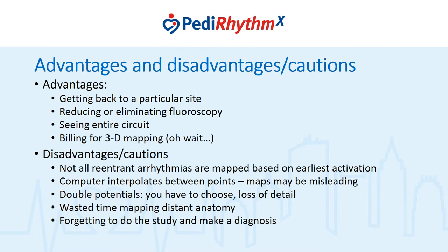There are certainly lots of advantages to electroanatomic mapping, but there are some cautions I want to make sure people understand. For me, the most important advantage is being able to get back to a particular site — this comes up all the time. When you have a successful site, you want to mark it; if the pathway recurs, you want to get back to that spot easily and quickly. Obviously, electroanatomic mapping allows you to reduce or eliminate fluoroscopy. You can also see the entire circuit if you map the entire heart. In the US, CMS recently changed the coding so that 3D mapping is basically bundled with standard ablations.